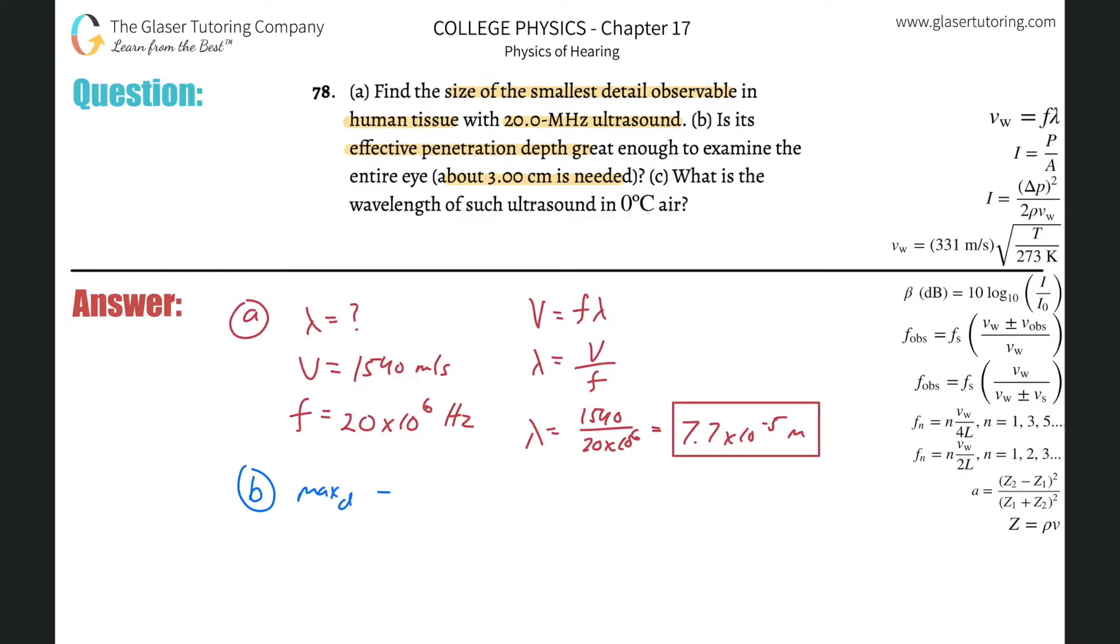So we get 500 multiplied now by this value of 7.7 times 10 to the minus 5, and what do we get? We get a value of about 0.0385, and that's in terms of meters.